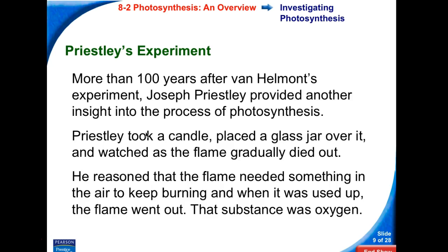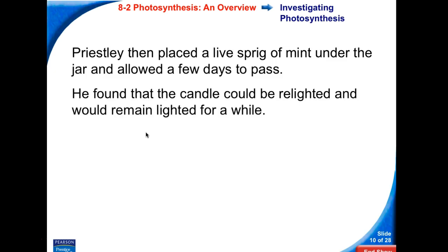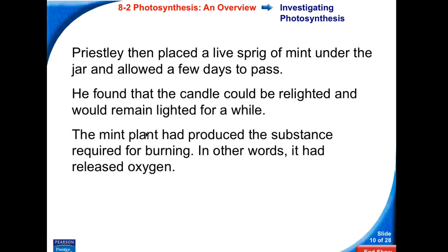He reasoned that the flame needed something in the air to keep burning. When it was used up, the flame went out. Of course, we know today that that substance was oxygen, because we know in order to have fire, we must have oxygen gas. Priestley then placed a live sprig of mint under the jar and allowed it to stay there for a few days. He found that the candle could be relighted and would remain lighted for a while. It definitely stayed lit longer than it had without the piece of mint. What happened? The mint plant had produced the substance required for burning. In other words, it had released oxygen gas.